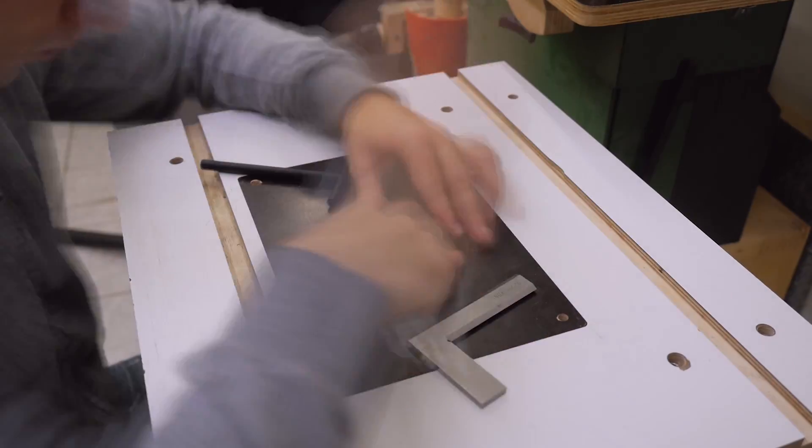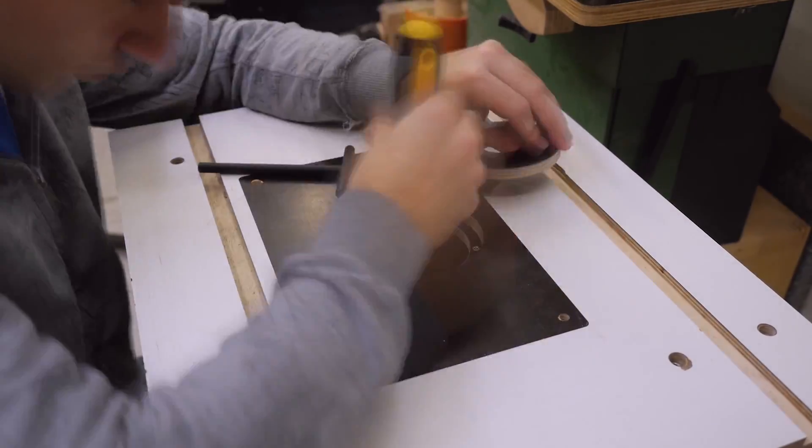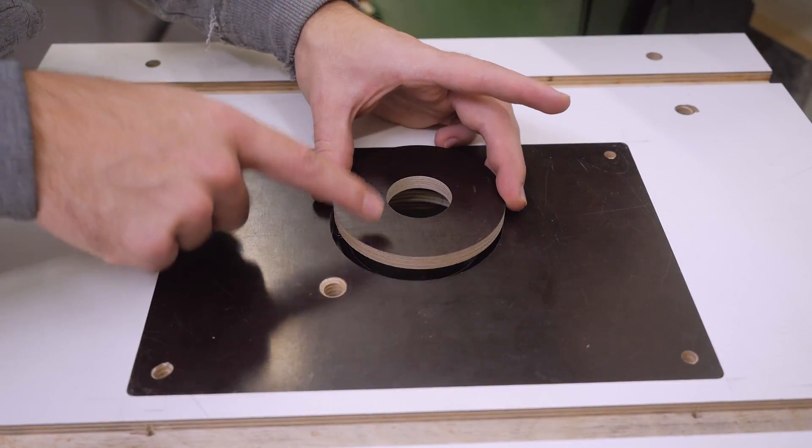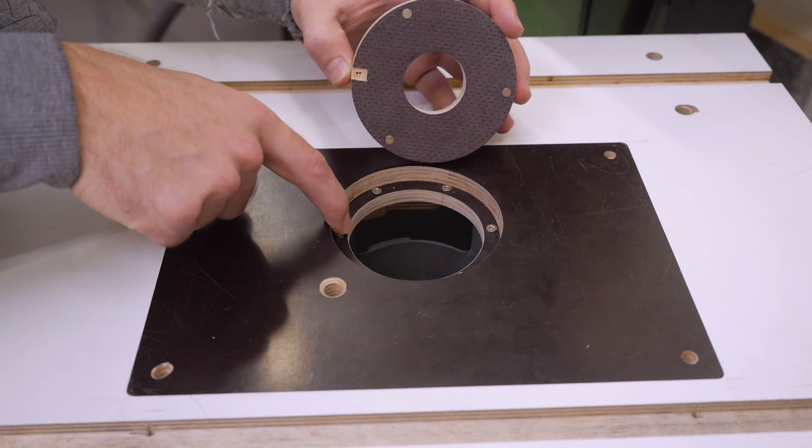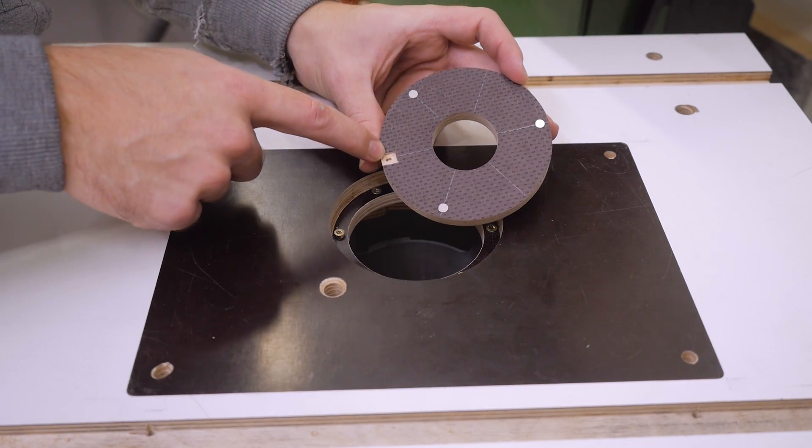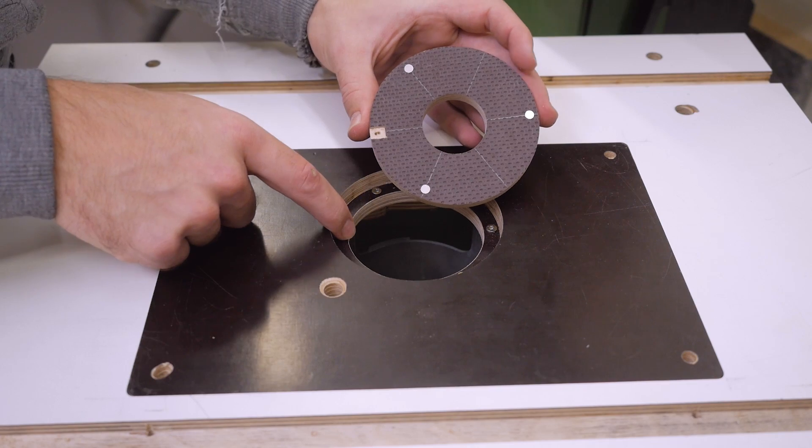And after that I spent some time leveling out the insert plate. To ensure the same orientation each time, this leveling screw sticks out further and here I drilled and chiseled a little notch where it fits in.